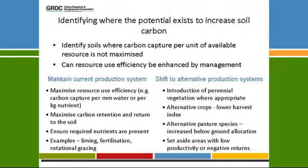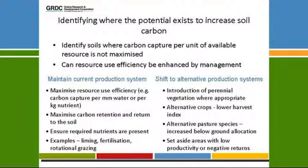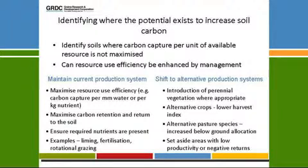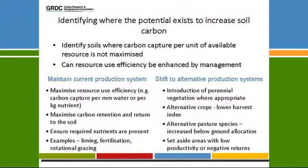I'll break this down into two chunks. The first is maintaining our current production system — the goal should be to maximize resource use efficiency, the amount of carbon captured per millimeter of water. We want to maximize carbon retention and return to the soil, and ensure nutrients required not only to grow the crop but to build carbon are there, whether from fertilizers or legumes in rotation. Examples of how to improve resource use efficiency include liming, fertilizers, and rotational grazing. One point: if you build carbon by adding nitrogen and you've got some nitrous oxide emissions, or methane emissions from stocking, the trading will require a net balance between all emissions.